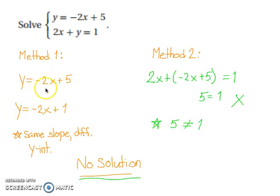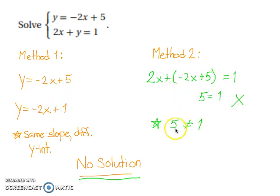The slopes are the same but there are different y-intercepts. And when we use the algebraic method, we end up with 5 attempting to equal 1, which is not possible. So no solution.